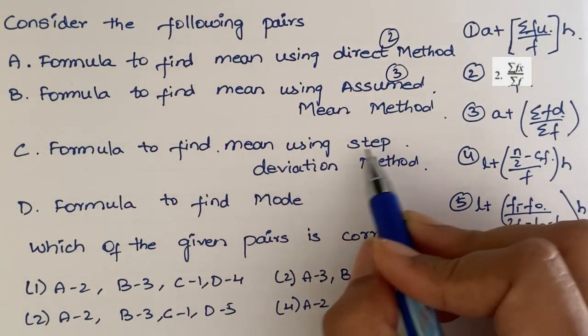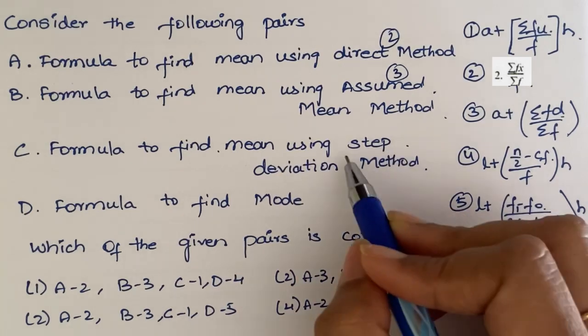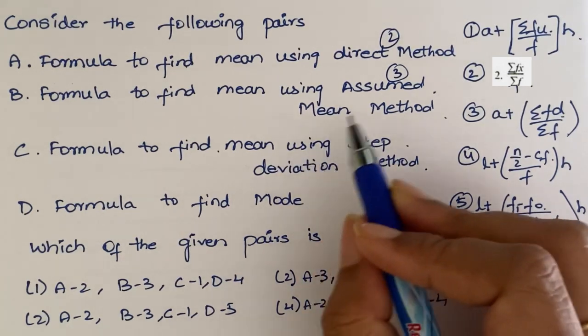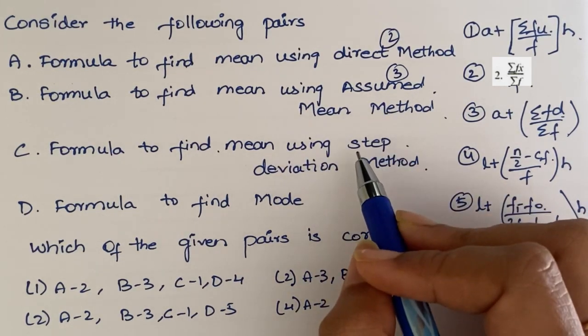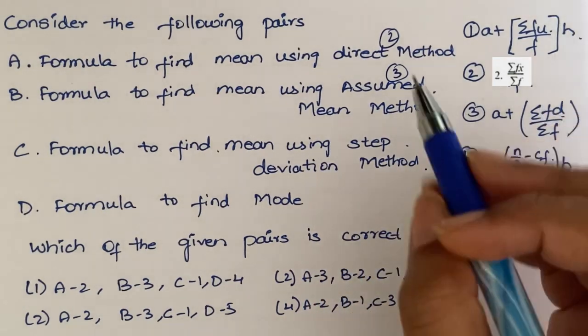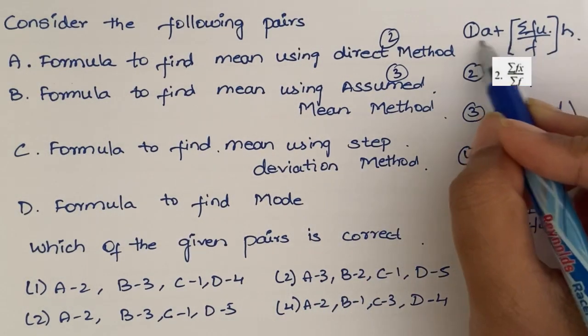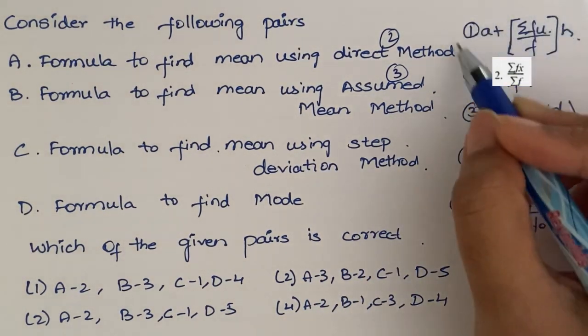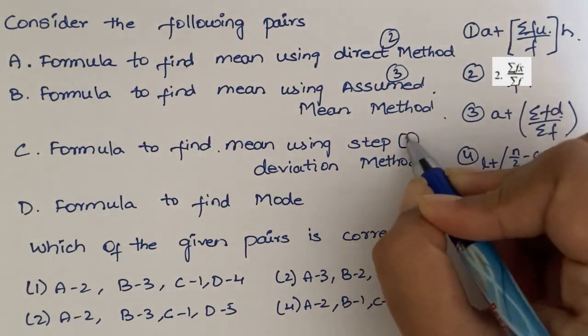Next. Formula to find mean using step deviation method. Step deviation method follows the assumed mean method, but we divide by one additional term. So, the formula is this one, which we have already learned. So, this is option 1.